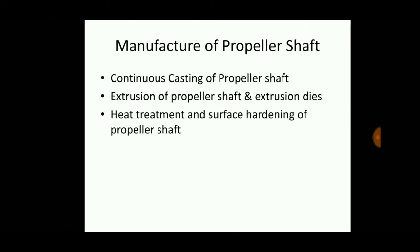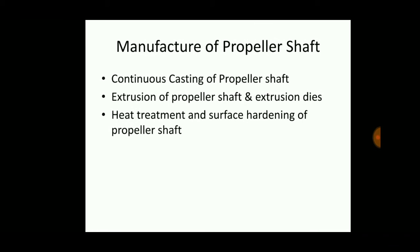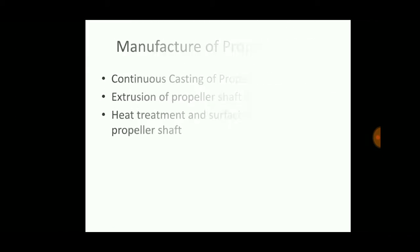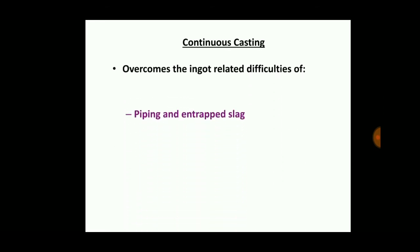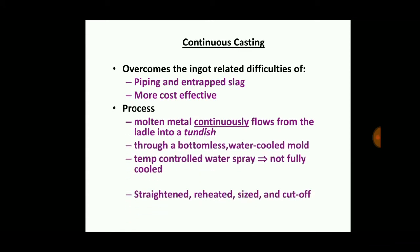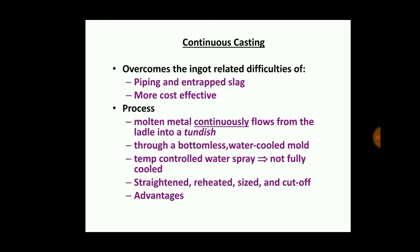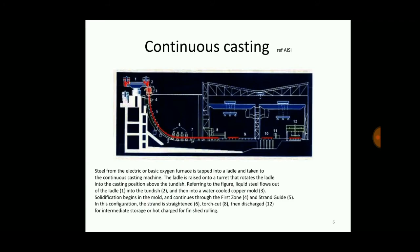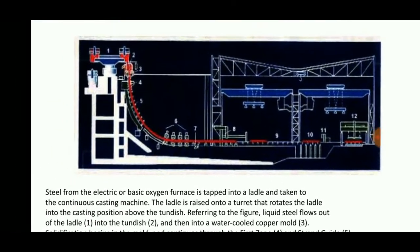Continuous casting is the method used for manufacturing the propeller shaft. It involves an ingot — a metal heated to molten condition — poured into a tundish and through a bottomless water-cooled mold. The water-cooled mold has water spraying guns so that water is sprayed on the molten metal, causing it to cool, solidify, and straighten, before being cut using a torch.